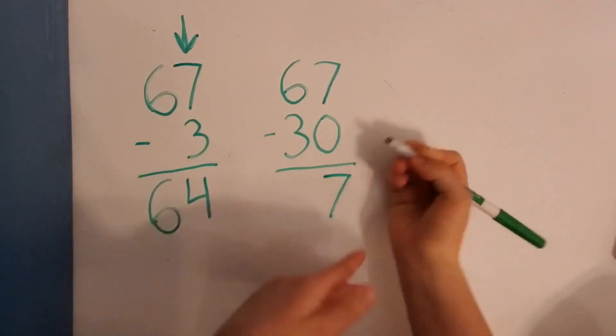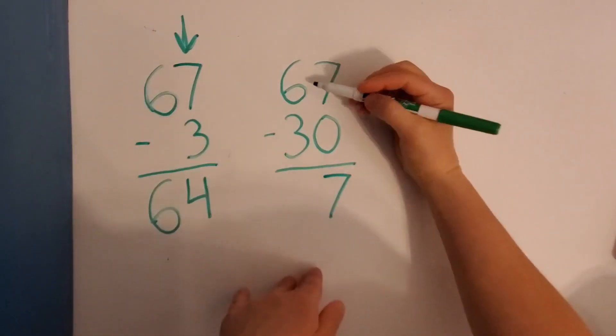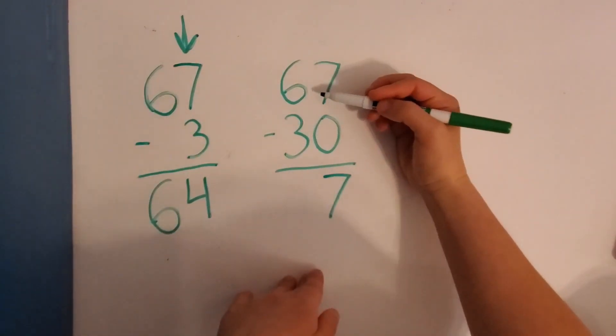It stays the same. 7 take away 0 is still 7. Then 6 minus 3. 6. Count backwards 3.